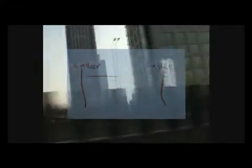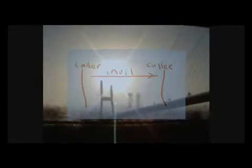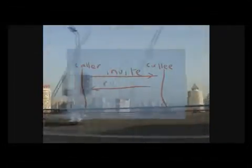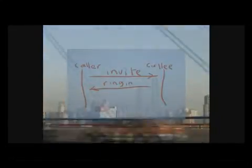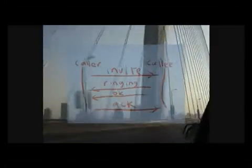Session establishment covers the following activities. First, from the caller side, sending a request to the colleague indicating a wish to start a conversation. In SIP, it is said the caller sends an INVITE to the colleague, and then once the colleague accepts the call, the caller will be notified with an OK response, and at the end the caller sends back an acknowledgement to the colleague confirming reception of the OK.